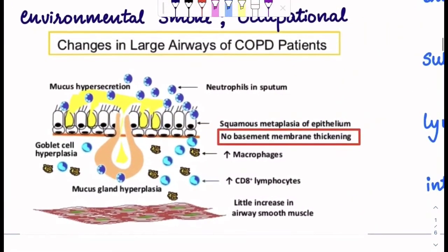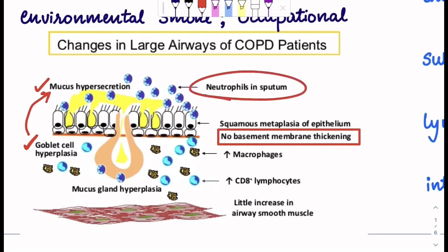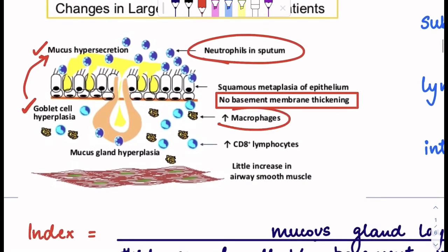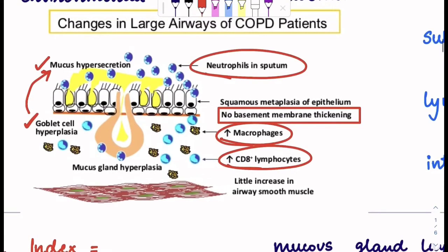When you look at this diagram, you can see very clearly these important points. There is mucus hypersecretion — goblet cell hyperplasia leads to mucus hypersecretion. There are neutrophils in the sputum. Then you have an increase in number of macrophages, increase in number of CD8+ lymphocytes. You need to remember that there is no basement membrane thickening. It all starts with the squamous metaplasia of the epithelium.